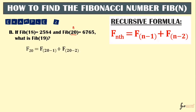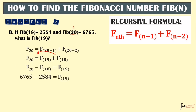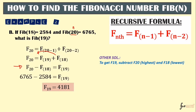We need F19 and F18 to get F20. Since F19 is missing, we rearrange: F19 = F20 - F18. F20 = 6,765 and F18 = 2,584, so we subtract them. The answer is 4,181 — that is our 19th term in the Fibonacci sequence. This is equivalent to the shortcut: 6,765 minus 2,584 equals 4,181, which also equals the result from the recursive formula.